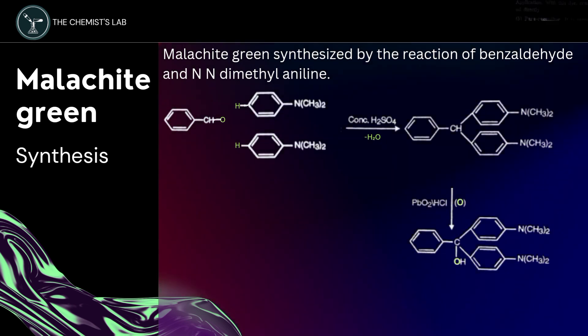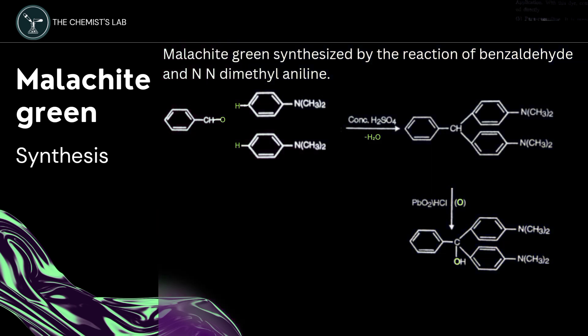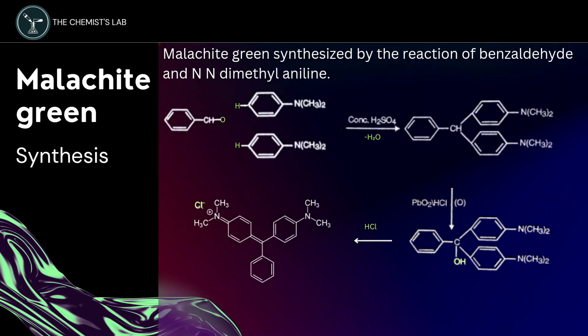The leukobase is oxidized with lead dioxide giving a color base. This color base reacts with hydrochloric acid to get malachite green. This hydrogen atom here and the hydroxyl group form a water molecule, thus shifting of electrons and the formation of a double bond occurs. The nitrogen atom here acquires a positive charge and the chlorine atom will attach to it.